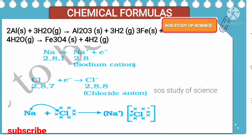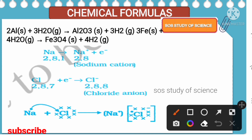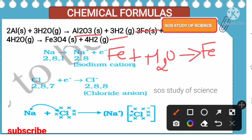Aluminium reacts with water (steam) to form aluminium oxide and hydrogen gas is released. When iron reacts with water (steam), we get iron oxide — Fe₃O₄ — along with hydrogen gas. Both aluminium and iron react with steam. Few metals react with cold water, few with hot water, and few (like aluminium and iron) react only with steam.